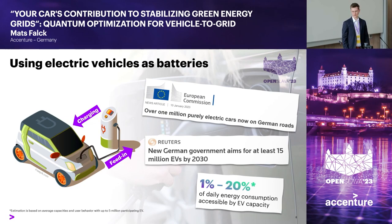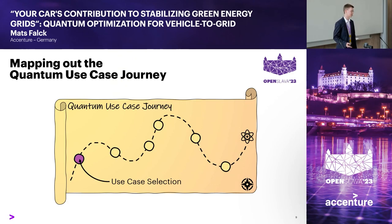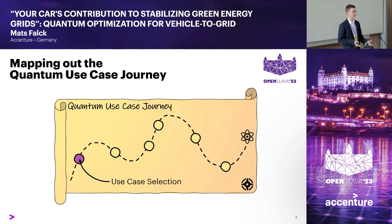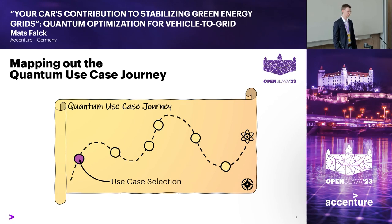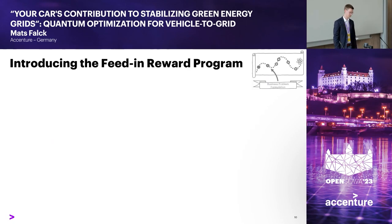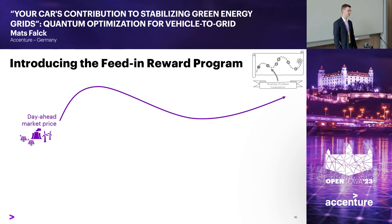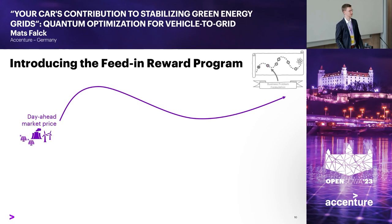What I just described is the first step of the quantum use case journey. To evaluate and solve problems on quantum computers, we first have to find a problem — in this case, using vehicle-to-grid, the batteries of electric vehicles, to shift network loads on the energy grid. Next, we need to make this more precise and formulate the problem mathematically, which we call the feed and reward program.